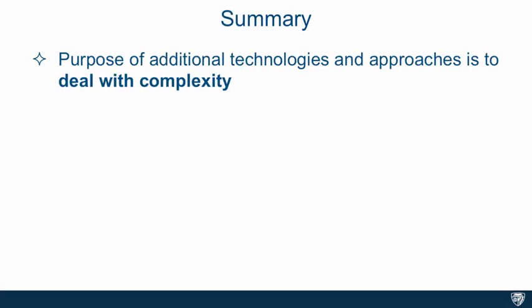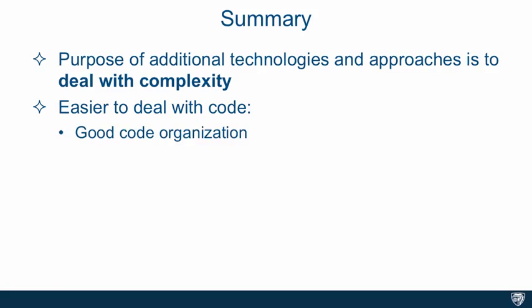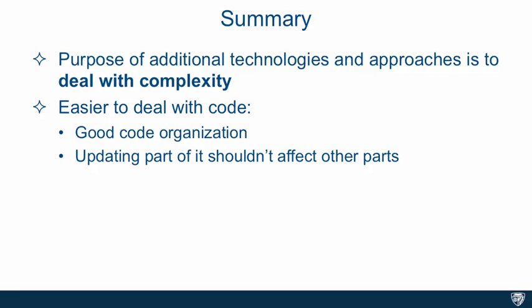So as a summary, the purpose of additional technologies and approaches is not to make things more complex — they're there to deal with an inherent complexity that our code brings as it grows in functionality. We also spoke about what it means to have easier-to-deal-with code. First, we need good code organization so we can find relevant code quickly. Second, updating part of our code shouldn't affect other parts. We also want to write reusable code and certainly don't want to debug it in more than one place. And finally, we need to write testable code — small enough chunks that make it easy to test without having to deal with the entire system all at once.